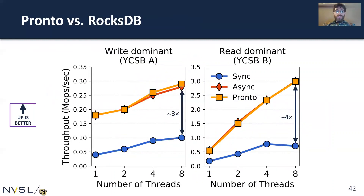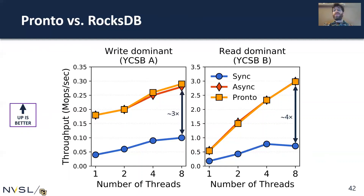Comparing Pronto versus RocksDB, which has two persistence modes: asynchronous mode, which may lose some recent operations using a batch commit strategy, and synchronous mode where every operation is immediately persistent — which is what Pronto offers. Pronto achieves asynchronous performance with synchronous guarantees: our synchronous Pronto performance matches RocksDB's asynchronous mode, and comparing apples to apples in synchronous mode, Pronto is 3 to 4x faster than RocksDB.